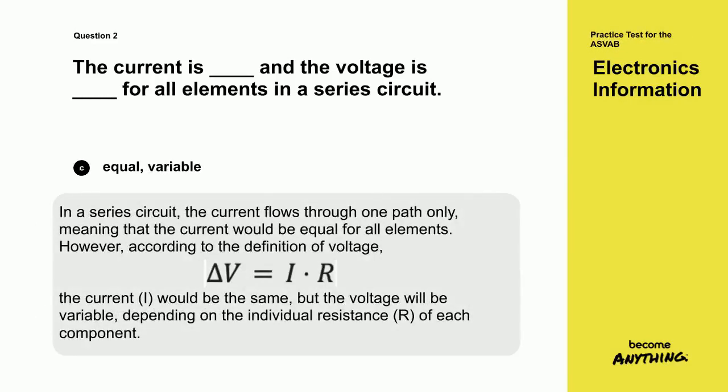In a series circuit, the current flows through one path only, meaning that the current would be equal for all elements. However, according to the definition of voltage, the current I would be the same, but the voltage will be variable, depending on the individual resistance R of each component.